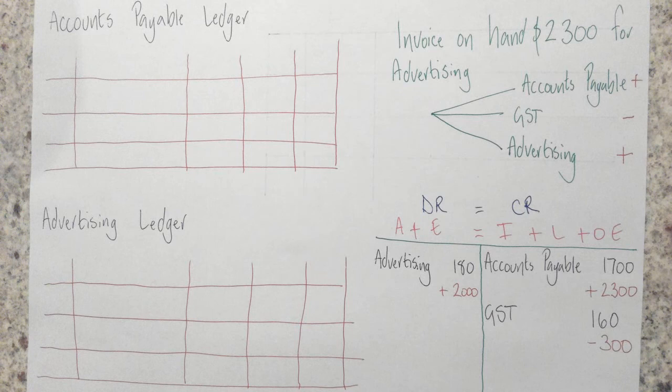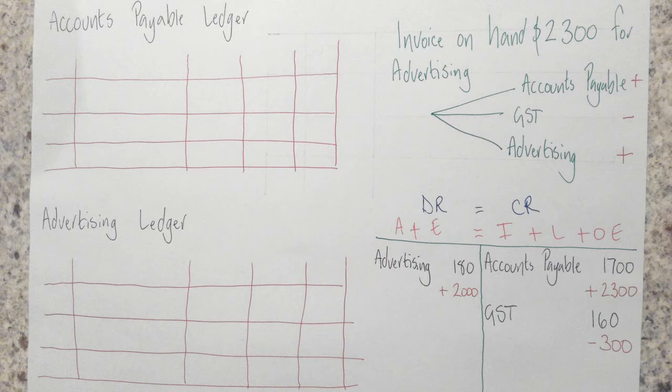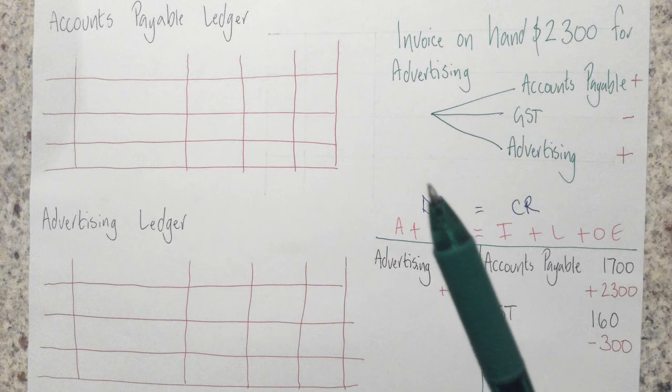Hello, kia ora, welcome. I'm going to look now — I'm following on from the other example that I've done on accounts payable. We've done the balance adjustment itself and we've done the journal for this. Now we're following up and doing the ledger. We're going to do the ledger for accounts payable and then we're going to do the ledger for advertising.